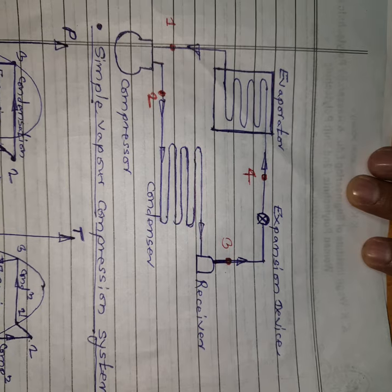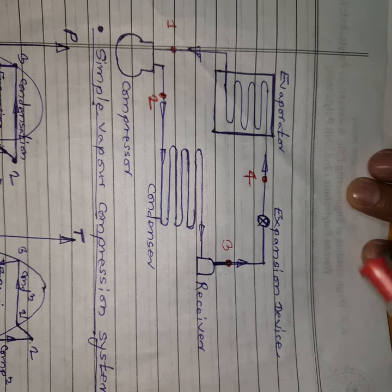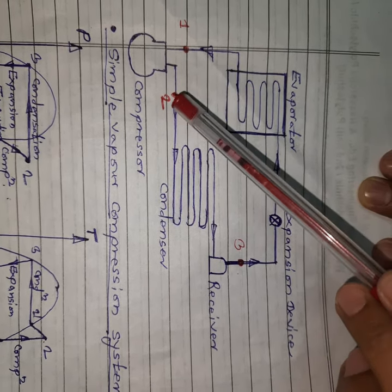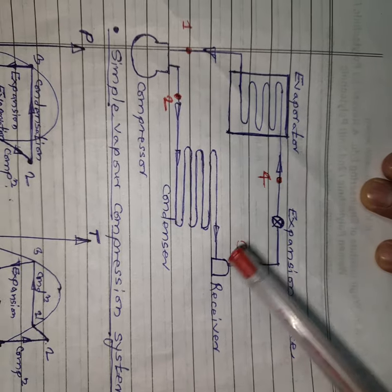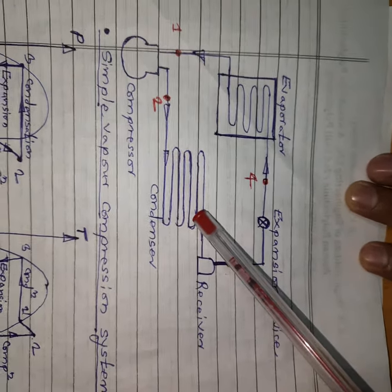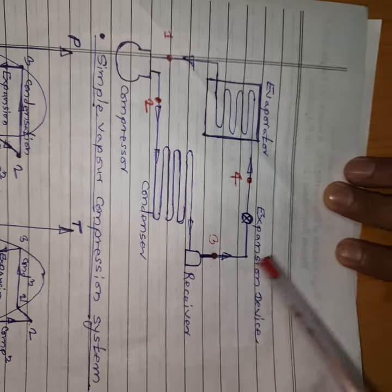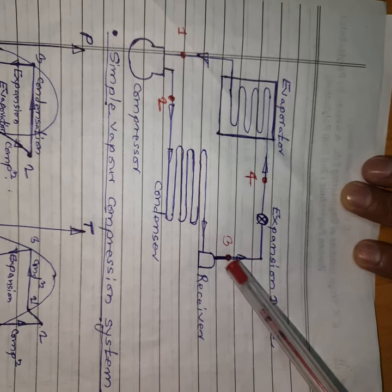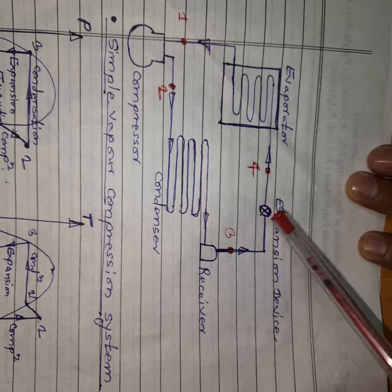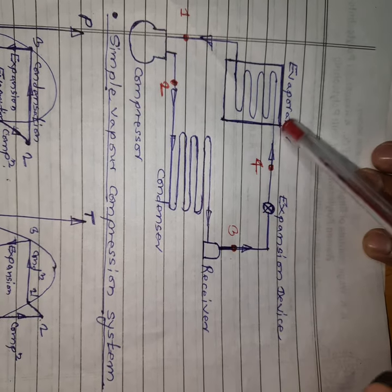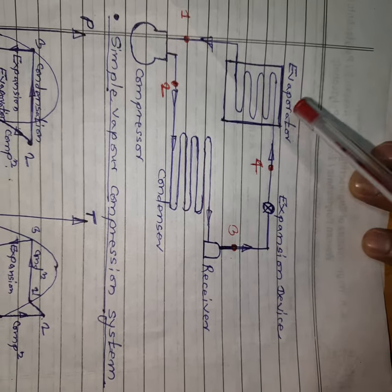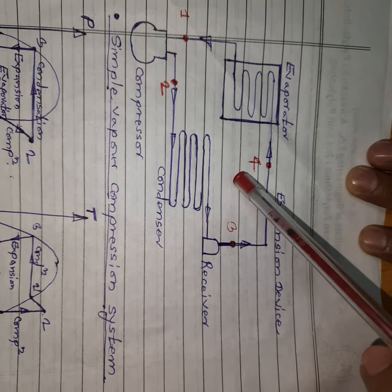The processes happening in each component are: 1 to 2, adiabatic compression process; 2 to 3, constant pressure condensation process in the condenser; 3 to 4, throttling process in the expansion device; and 4 to 1, constant pressure evaporation process.